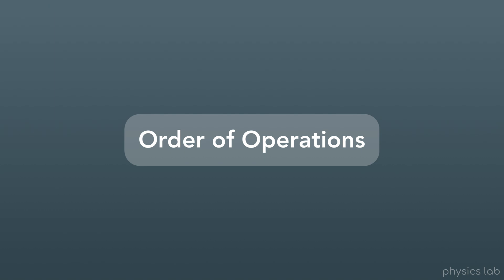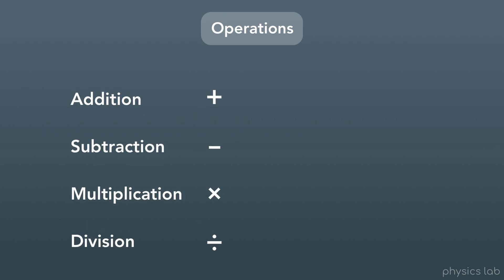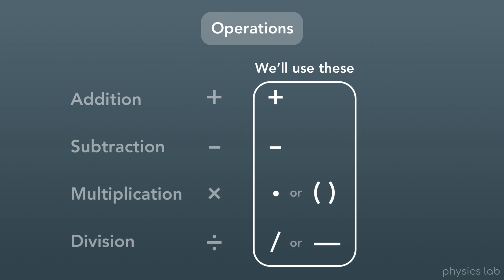But before we can start solving equations, there's one thing we need to cover: the order of operations. These are operations — addition, subtraction, multiplication, and division — and each one has a symbol we commonly use. For addition and subtraction, we'll still use the plus sign and minus sign. For multiplication, sometimes you'll see it written as a dot, but more commonly you'll see two numbers next to each other with one or both inside parentheses, with no other symbol between them.